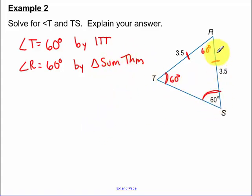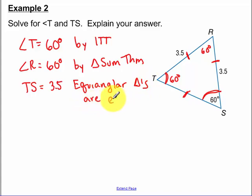So I have three angles that are all 60. The equiangular triangles are also equilateral. So TS is then equal to 3.5 because equiangular triangles are also equilateral.